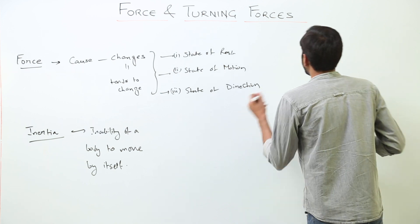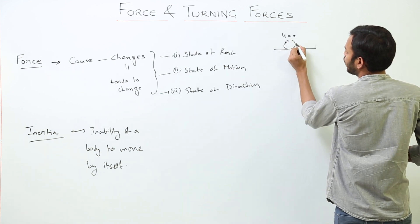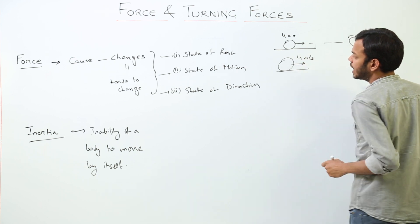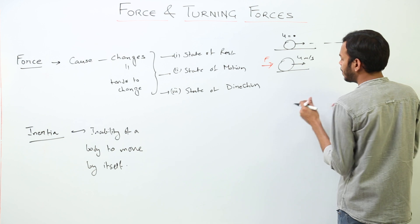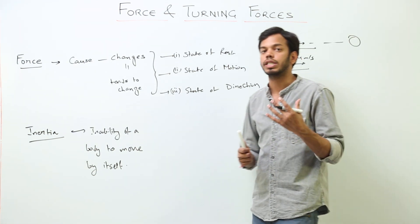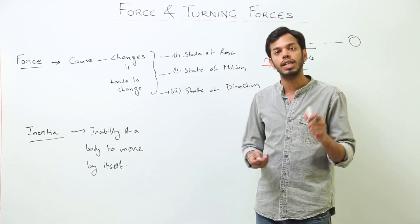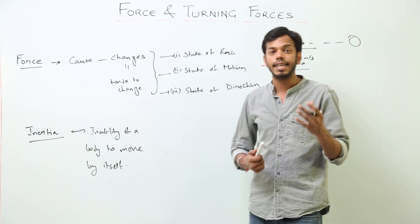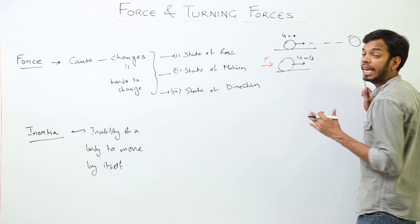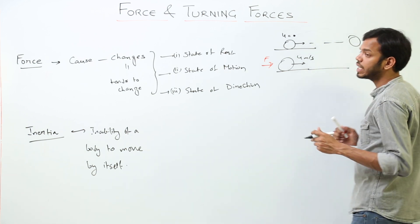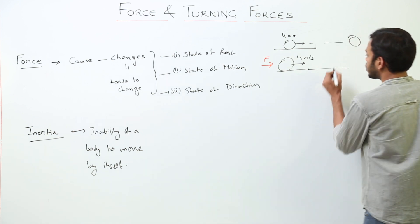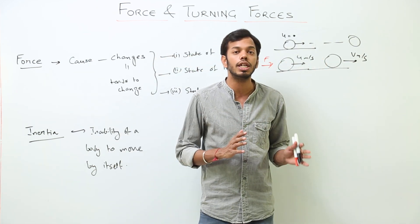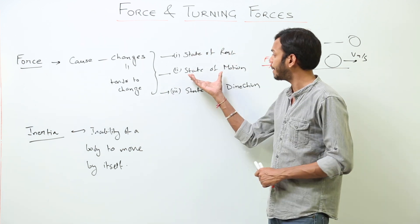Similarly, for state of motion: in the first case the object was initially at rest and force was applied to make it move. In the second case, the object is already moving with some initial velocity u m/s. A force of F Newtons is applied on the body, and the body might increase or decrease its velocity — that depends on the direction of force. If the force is in the supporting direction, velocity increases; if opposing, it decreases. The body will now move with velocity V m/s.